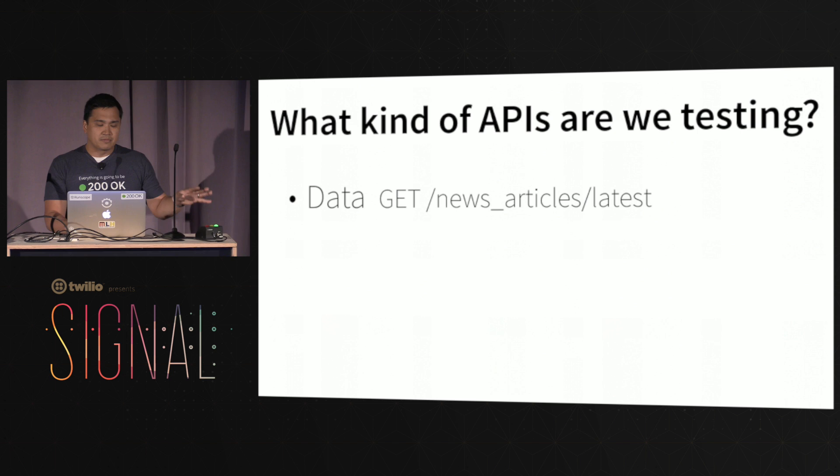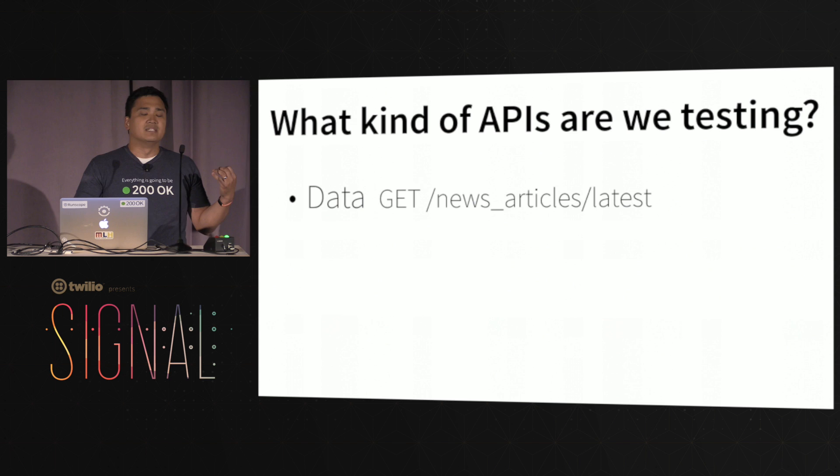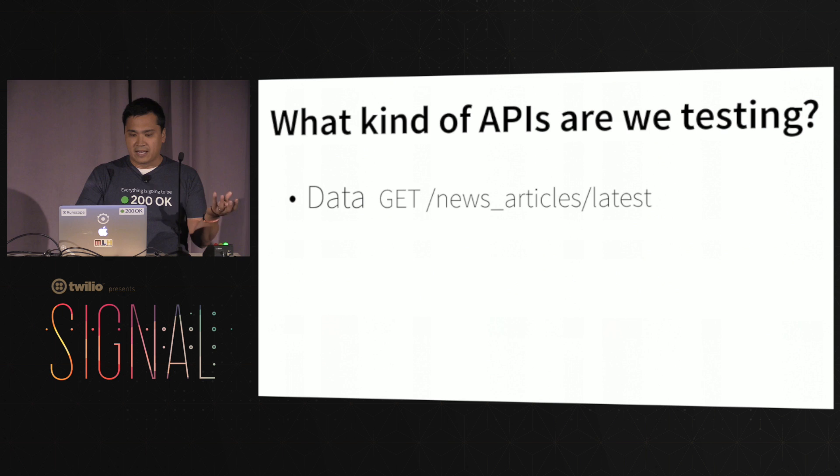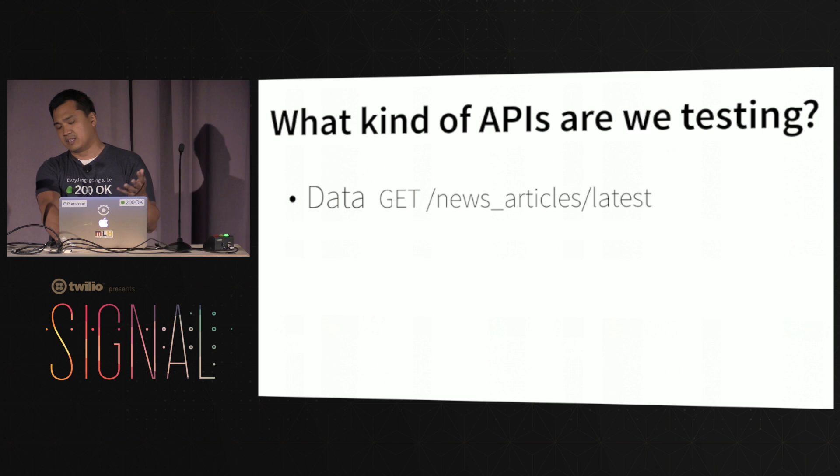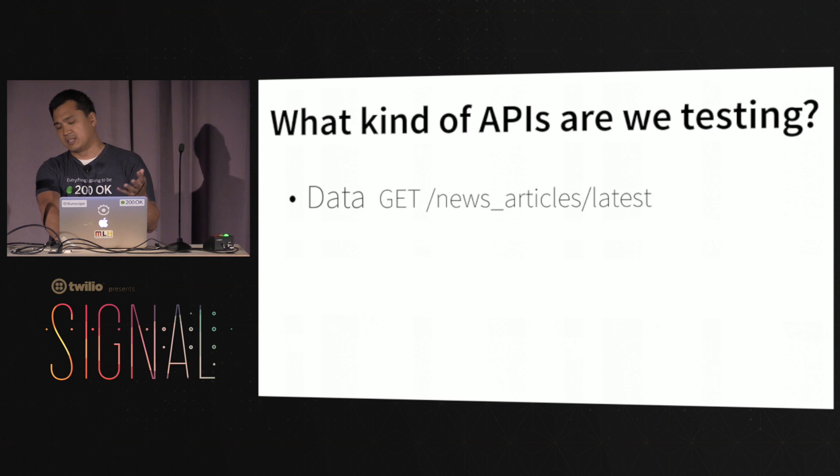I'm going to oversimplify things a little bit and say: what kind of APIs do we test? At Mashery, I noticed we have a lot of APIs with simple GET methods on not-so-static data — data where you're retrieving status, or getting a list of latest news articles, similar to getting the most recent messages on Twilio's API. That's a nice GET method.